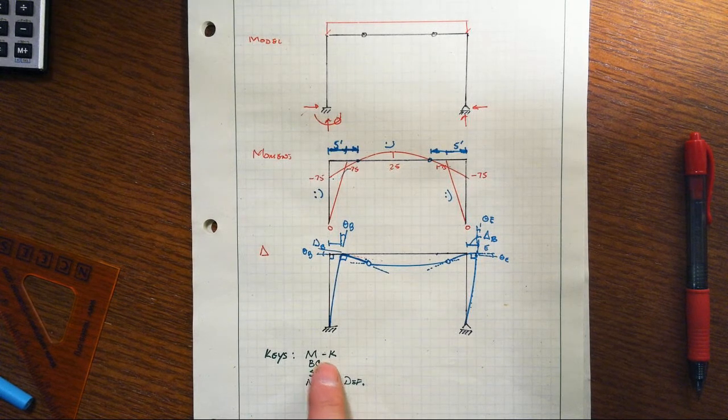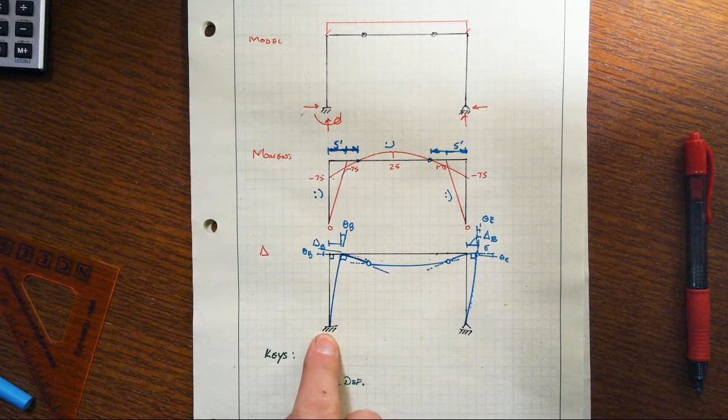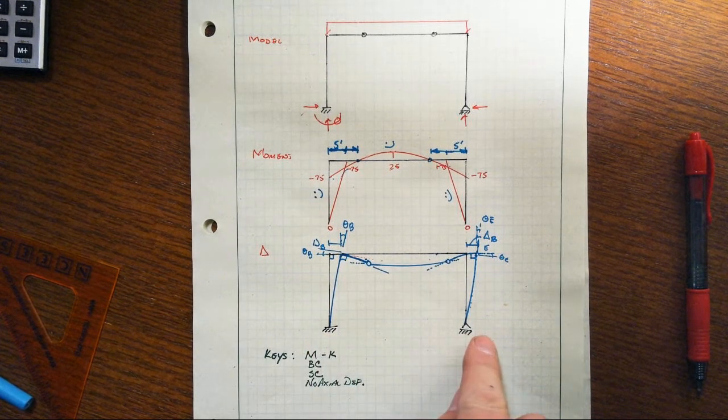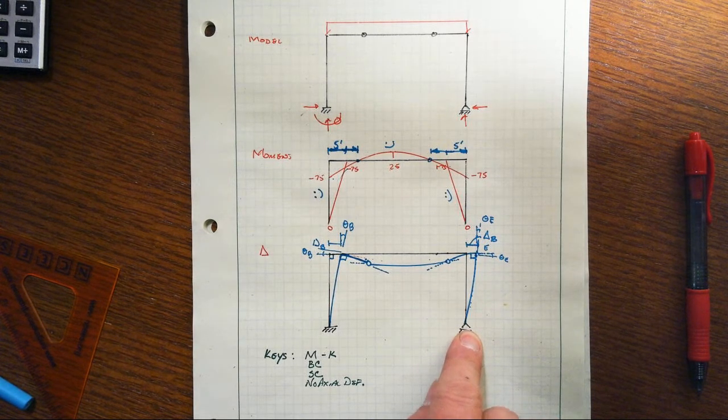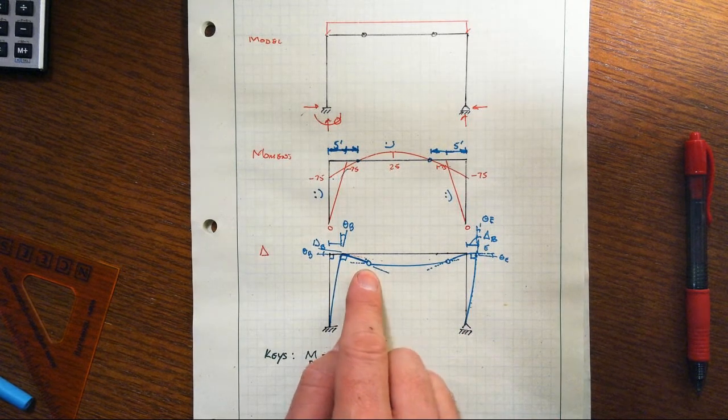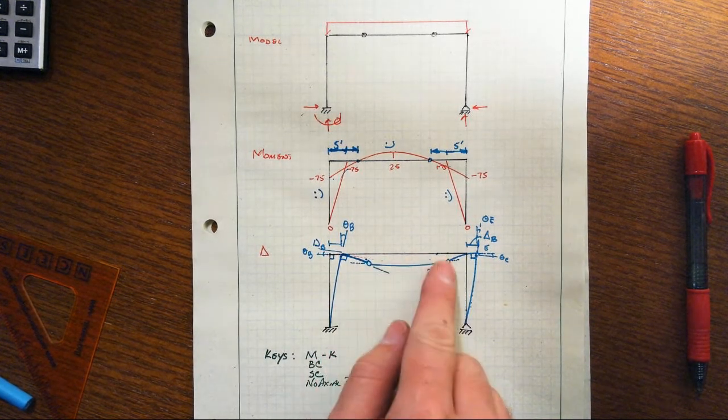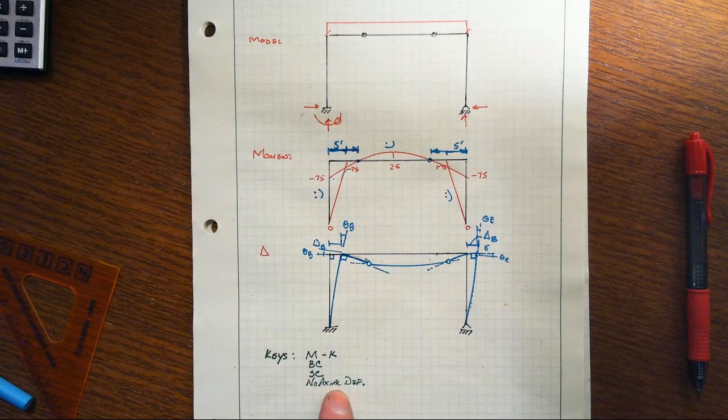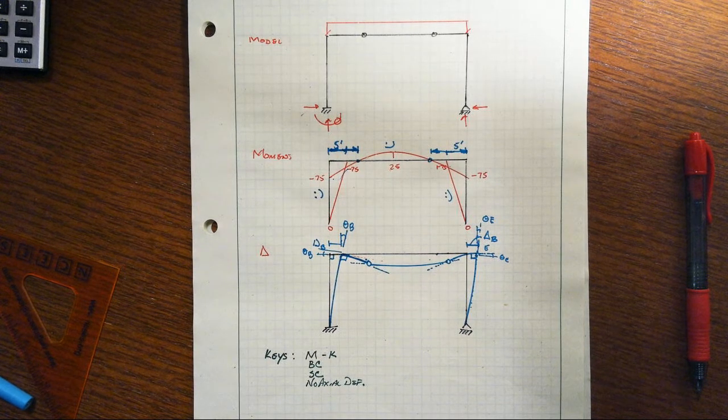So notice, because of the way the supports are set up, this actually sways to the right. That's the only way to get a deflected shape in there that is consistent with the moment diagram. And those keys, moment curvature, smiley face, frowny face, boundary conditions. We have no displacements at all at the fixed. We have no translations at the pin support, but we do have a rotation. Special conditions. We have a break in the slope at the two hinges. They do move down. And we have no axial deformations implied in our deflected shape.